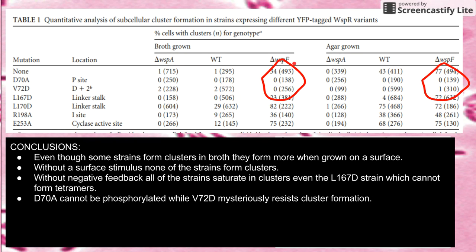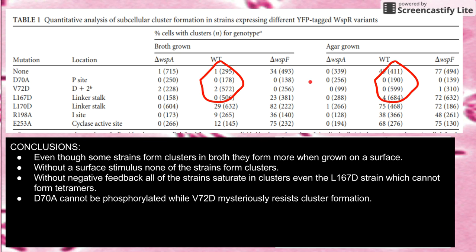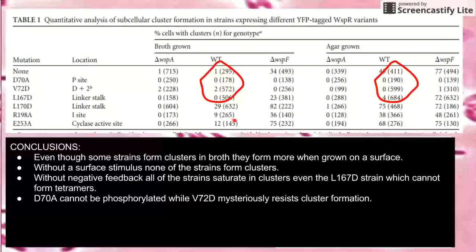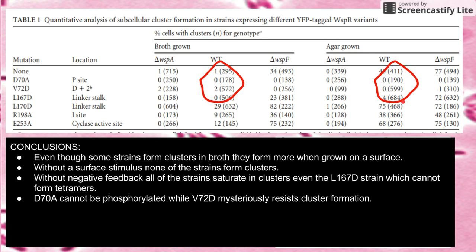In the WISP-F mutant, this mutant basically deletes the negative feedback of CDGMP — CDGMP normally inhibits WISP-R after a certain extent, but without WISP-F that doesn't happen. So you can see that basically all of these are saturated with clusters, with the exception of D70 and V72, which can't get phosphorylated and just don't make clusters. In the wild type, all of these strains basically make some clusters in broth, but make more clusters on a surface — again reinforcing the surface is important — and once again the two exceptions are D70 and V72.